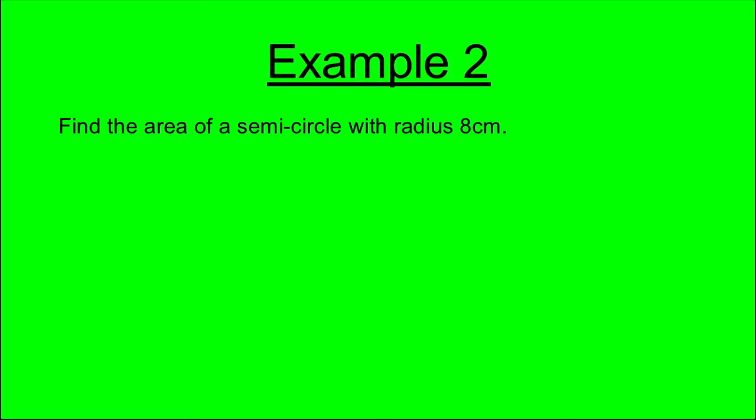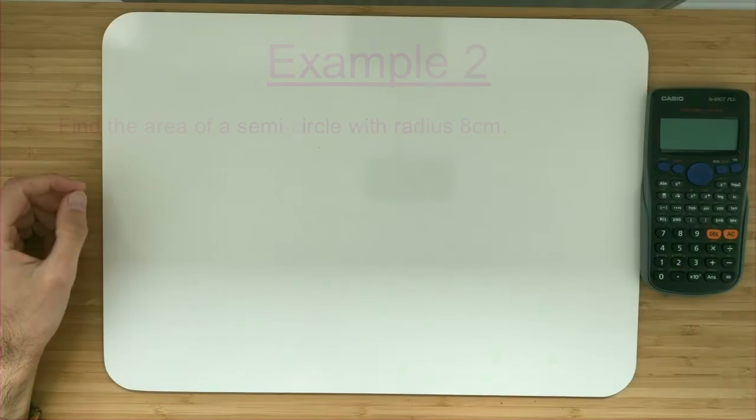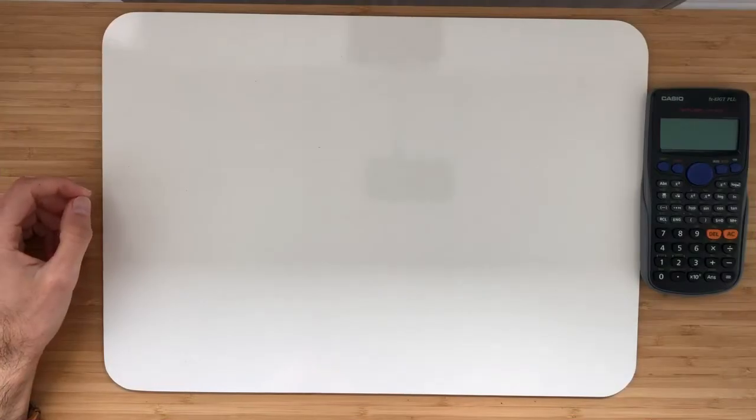Example 2: Find the area of a semicircle with radius 8 centimetres. In example 2 we're asked to find the area of a semicircle with a radius of 8 centimetres.